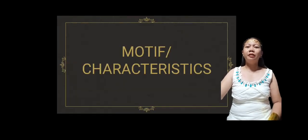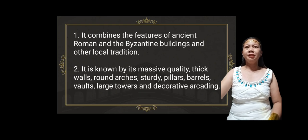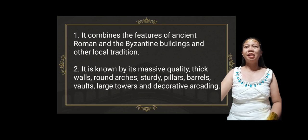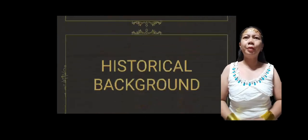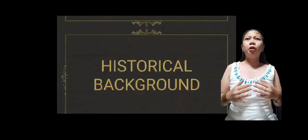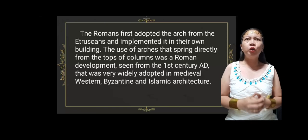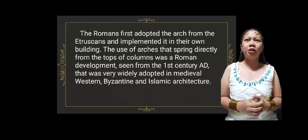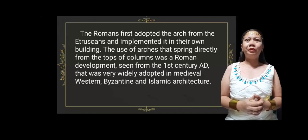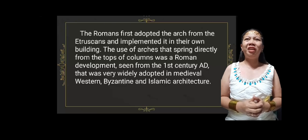Here are the motifs or characteristics of Roman art. First, it combines the features of ancient Roman and Byzantine buildings and other local traditions. Second, it is known by its massive quality: thick walls, round arches, sturdy pillars, burials, vaults, large towers, and decorative arcades. Regarding the historical background, the Romans first adopted the arch from the Etruscans and implemented it in their own buildings. The use of arches springing directly from the tops of columns was a Roman development seen from the 1st century AD, very widely adopted in medieval Western, Byzantine, and Islamic architecture.